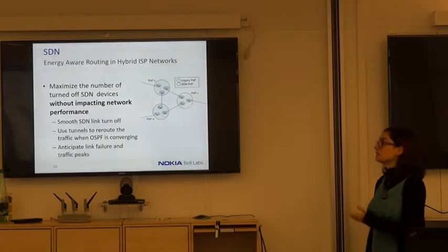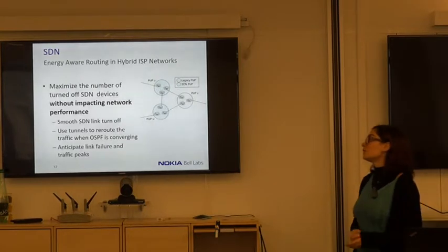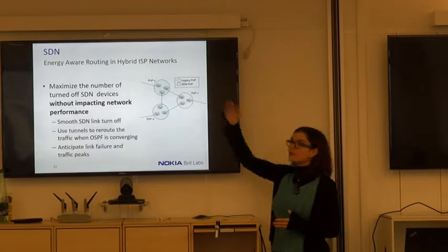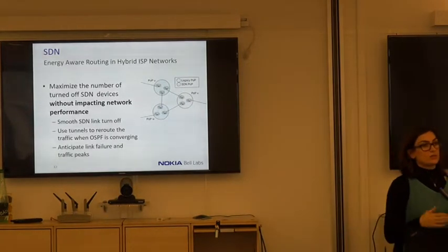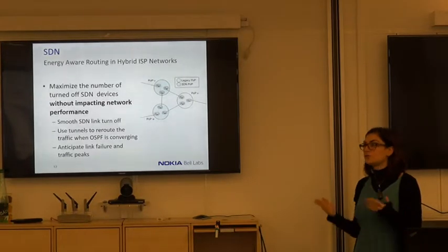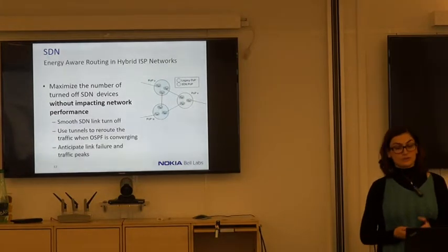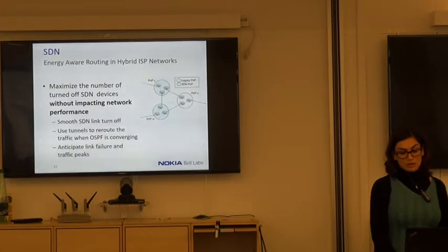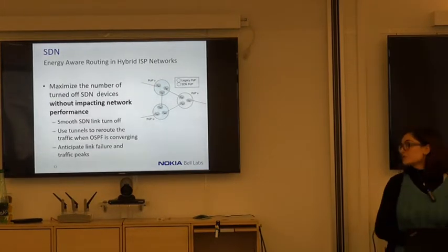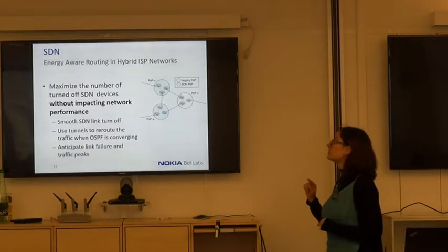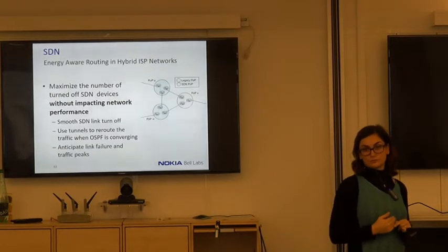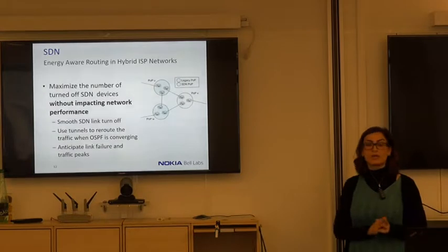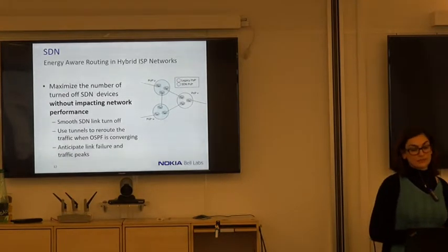The other work I've done is energy-aware routing, conducted on hybrid ISP networks — networks composed of both SDN and legacy nodes. In energy-aware routing, we want to turn off links and nodes to decrease energy consumption. However, we don't want to impact network performance. To avoid losses, we suggest using a smooth SDN link turnoff. Specifically, we're turning off SDN nodes or links connected to an SDN node — not links between two legacy nodes, which we cannot control. We use smooth SDN link turnoff, tunnels to reroute traffic, and we try to anticipate link failures and traffic peaks.